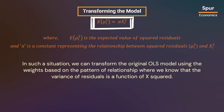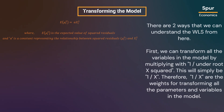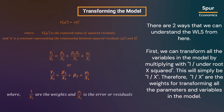In such a situation, we can transform the original OLS model using weights based on the pattern of relationship — we know that the variance of residuals is a function of X squared as shown earlier. There are two ways to understand WLS from here. First, we can transform all the variables in the model by 1 over the square root of X squared, which simplifies to 1 over X. Therefore, 1 over X are the weights for transforming all the parameters and variables in the model.